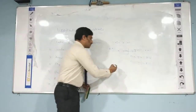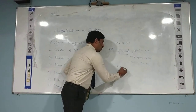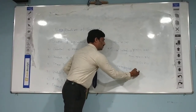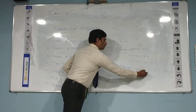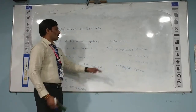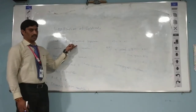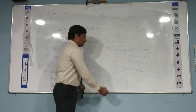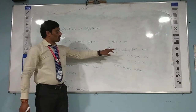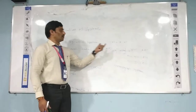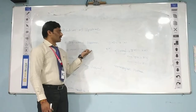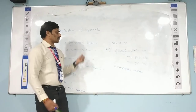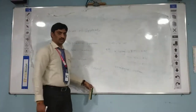Another name for a static system is a memoryless system. Otherwise, the system is said to be dynamic. A dynamic system is one where the output depends on past inputs as well as future inputs sometimes.